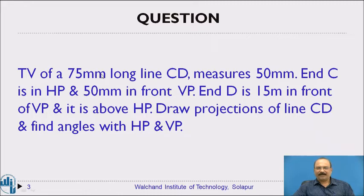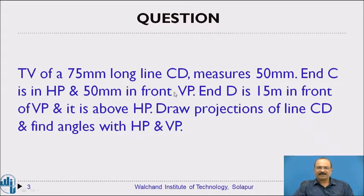In the given problem, 75 mm is the true length of the line named CD, and it measures 50 mm — meaning the actual length is 75 mm but it appears as 50 mm. C is in HP means we place point C on the XY reference line, and 50 mm in front of VP means we measure 50 mm from the XY line as a distance.